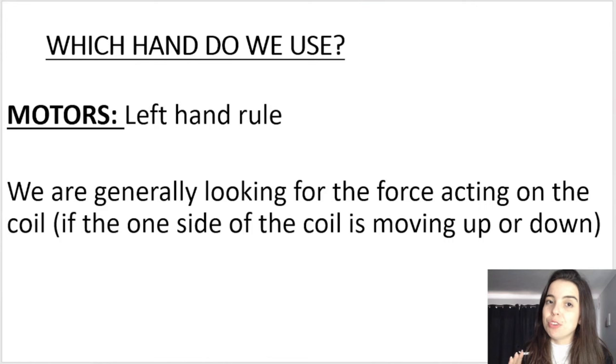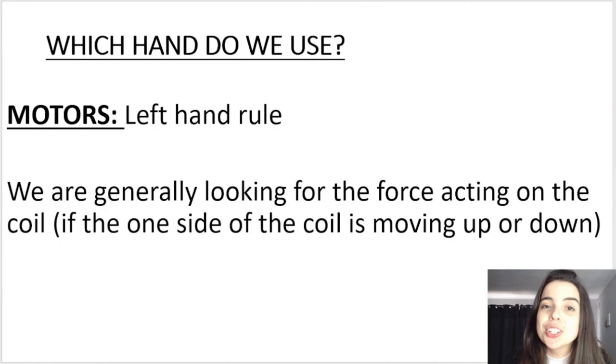For motors, this is obviously different. Remember, it's technically the opposite. We are converting or transforming from electrical energy into mechanical energy. So there's already a current flowing through the coil. We already know the direction of the current. But we want to know which way is this coil going to turn. Remember, we're converting it into kinetic or mechanical energy. So we use our left hand to figure out the force on the sides of the coil to determine which way it's going to rotate or turn.